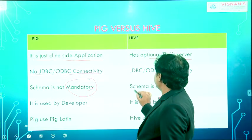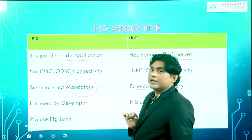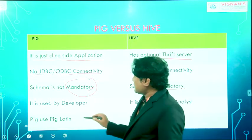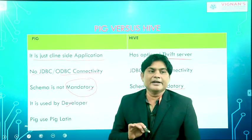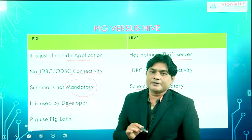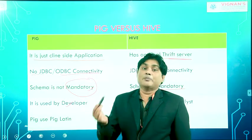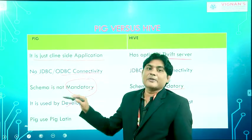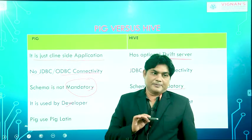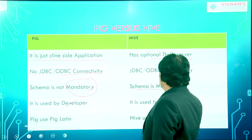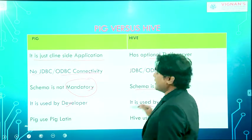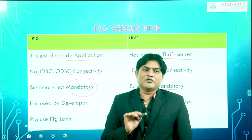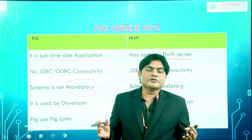In Hive, schema is 100% required because Hive works on structured data, and structured data has a rigid schema - you must define a schema for Hive. Pig is used by developers who work with scripting languages like Python, Ruby, or shell scripting, so Pig is designed for and used by developers.